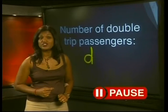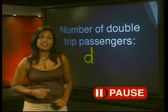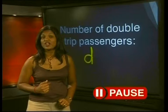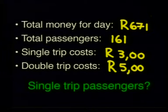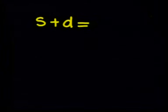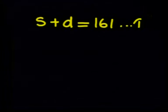Now we can set up equations to solve. Look again at the information. What equations can we make? We know that the total number of passengers is 161. So we can write S plus D is equal to 161 as our first equation.